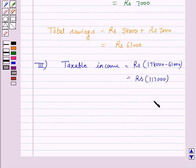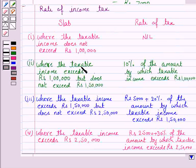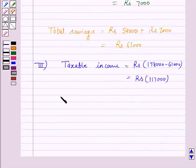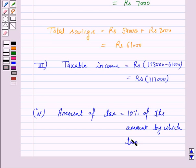The next step is to calculate the tax payable on this taxable income. From the slab, we can see that where the taxable income exceeds Rs. 1,00,000 but does not exceed Rs. 1,50,000, the rate of tax is 10% of the amount by which taxable income exceeds Rs. 1,00,000. So, the tax is 10% of (Rs. 1,17,000 minus Rs. 1,00,000).